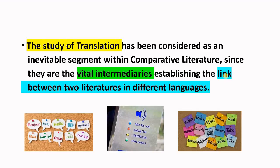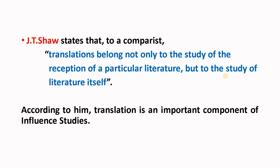Literature written in regional languages in India — we are able to read them through translation. J.T. Shah, a comparatist, states that to a comparatist, translations belong not only to the study of perception of a particular literature, but to the study of literature itself. So translation nowadays is considered as a branch of literature itself.